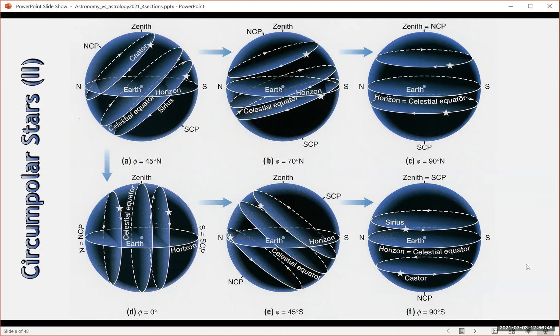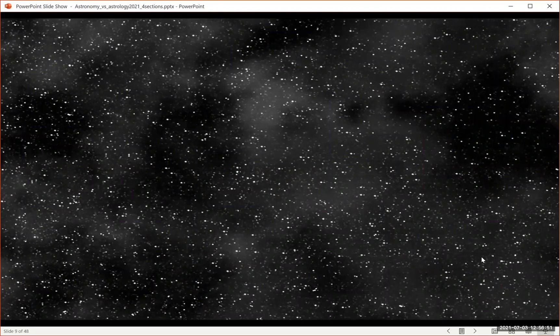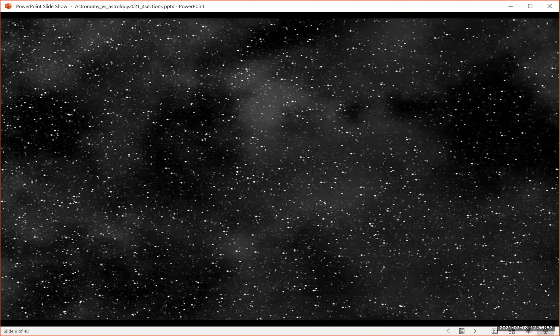So you can see how the circumpolar stars work. We've just learned about the celestial sphere and the idea of stars that don't rise and set, and that others do. In the next section, we'll get into understanding constellations and the ecliptic.